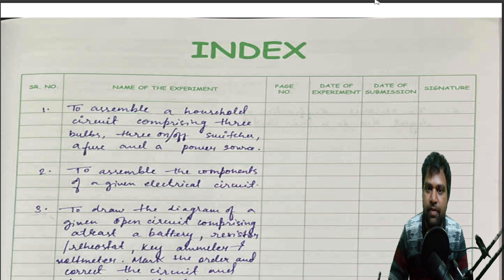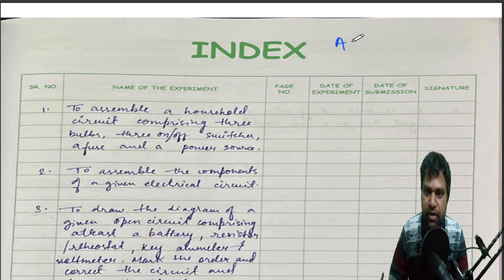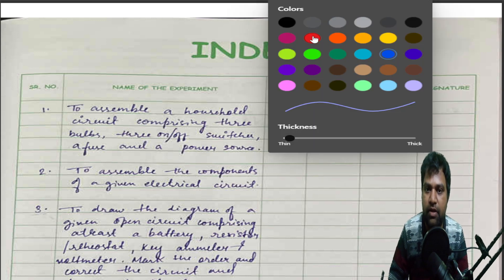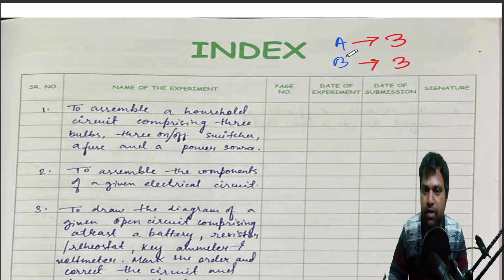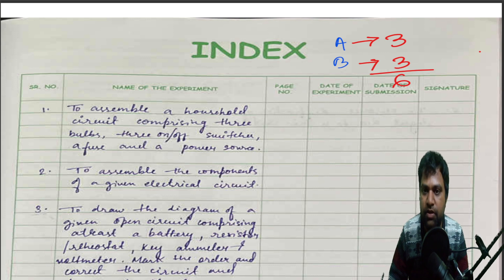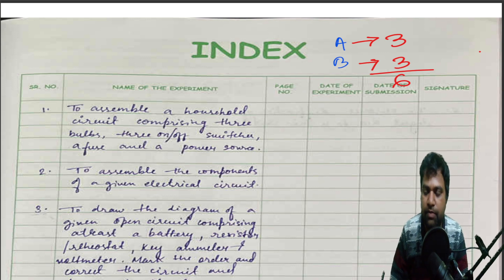There are two sections in the activity file. If you see the syllabus, you can see there are two sections: Section A and Section B. From each section you have to write three activities, so in total you have to write a minimum of six activities. If you can write more than six, that's also fine, but minimum six you have to write.